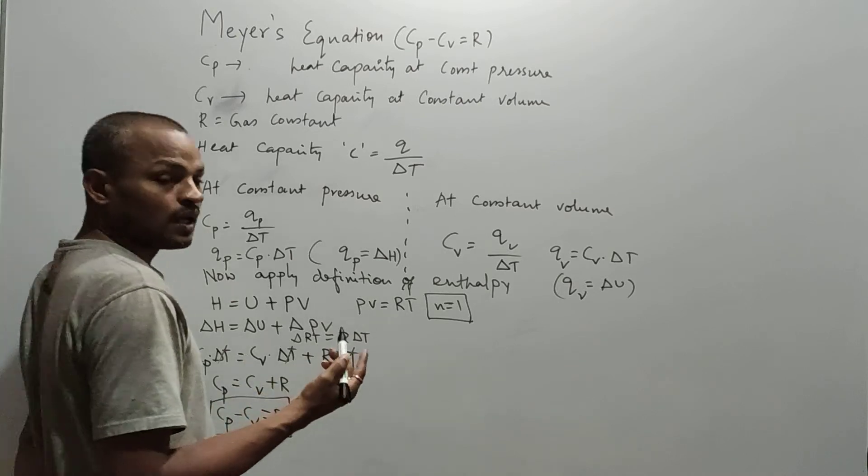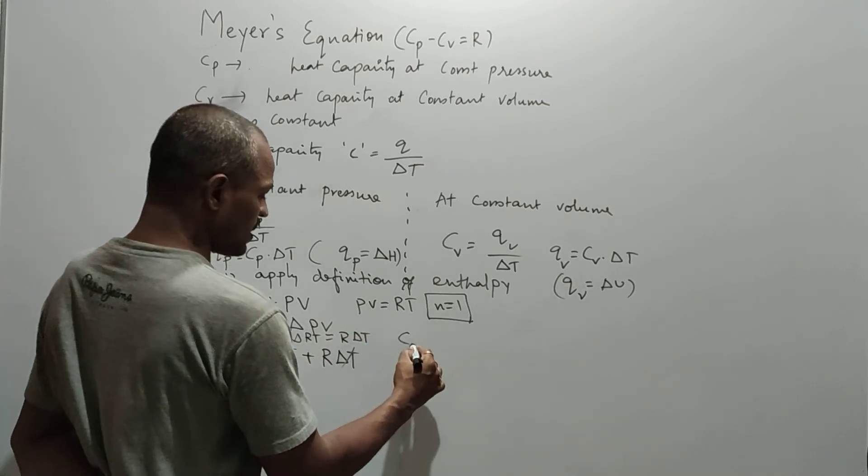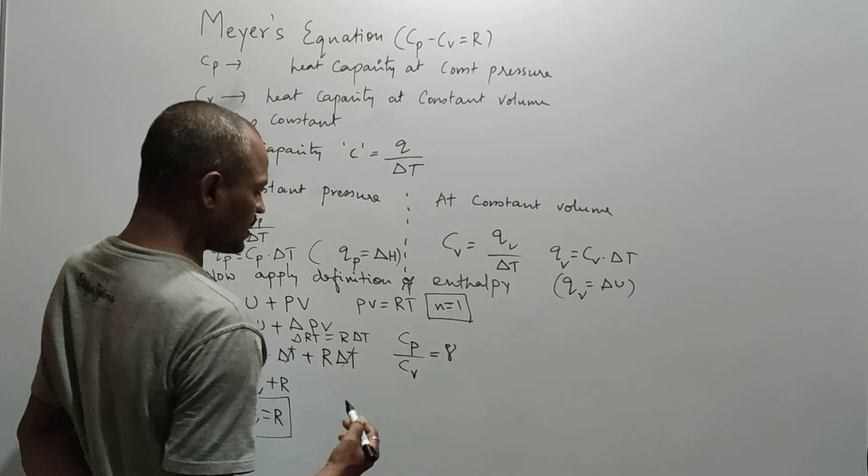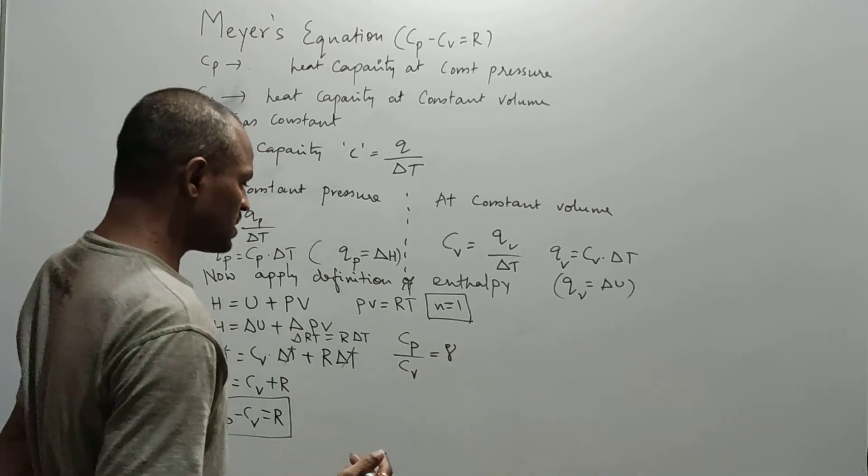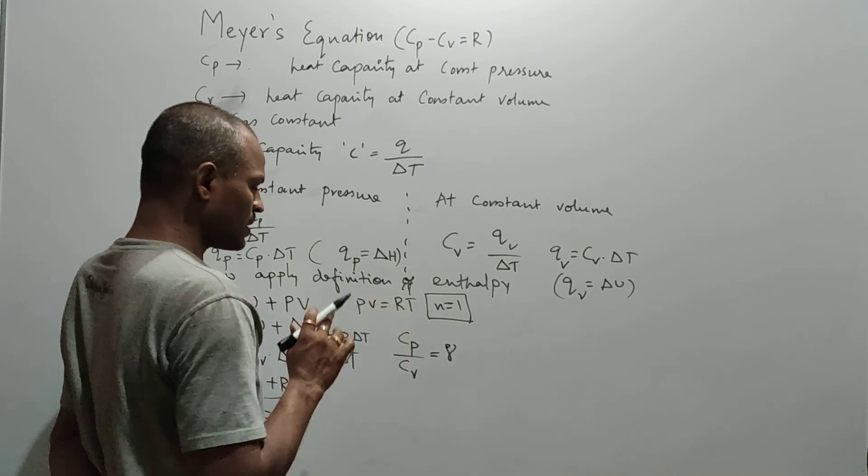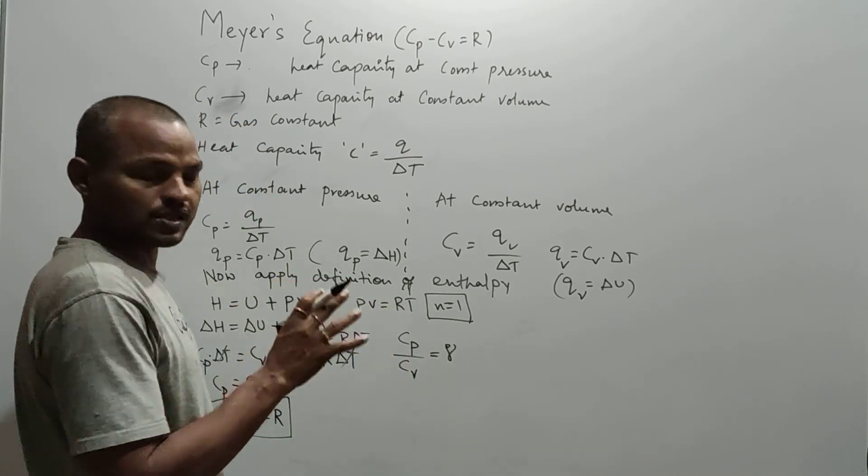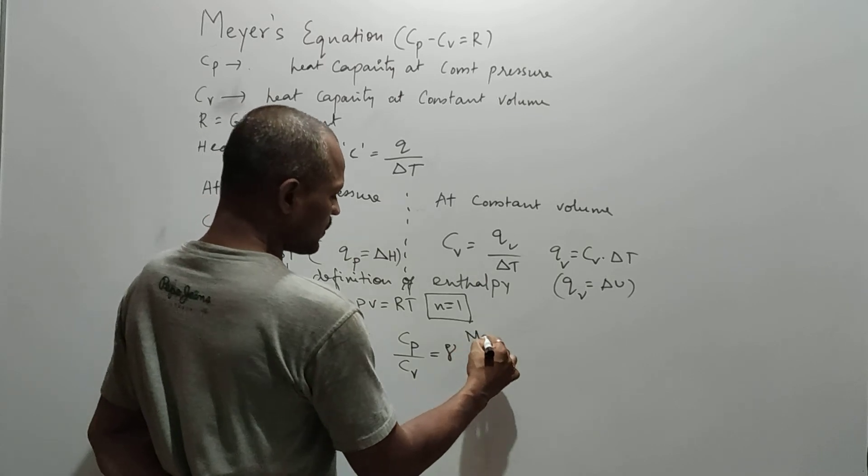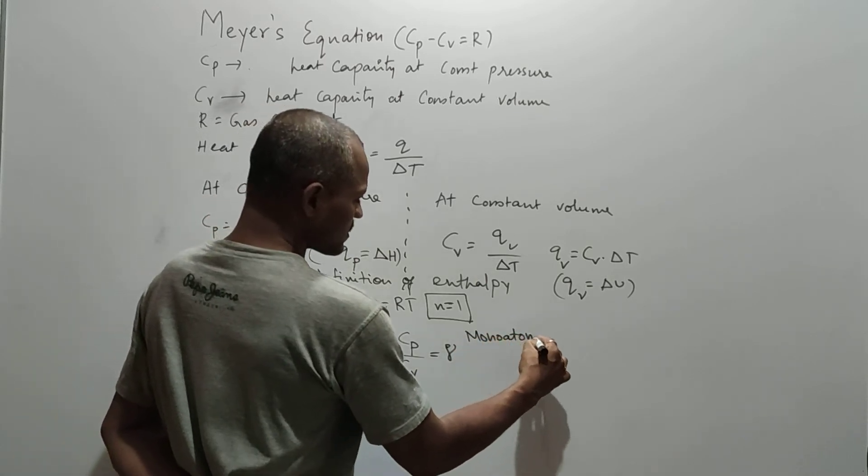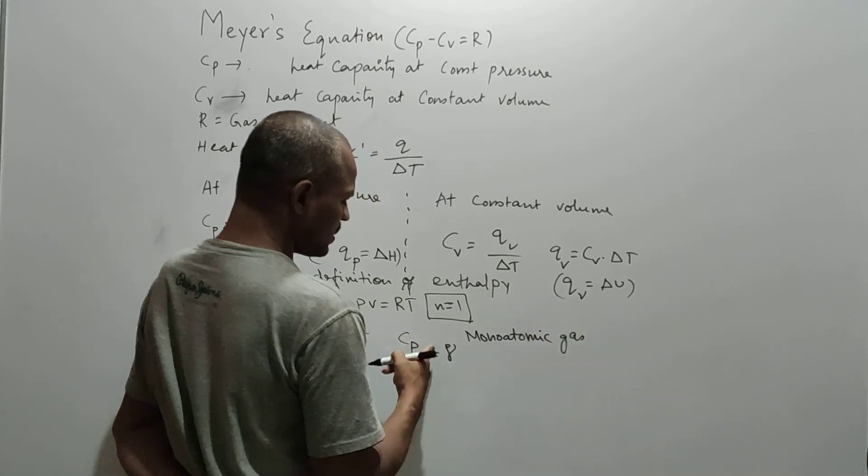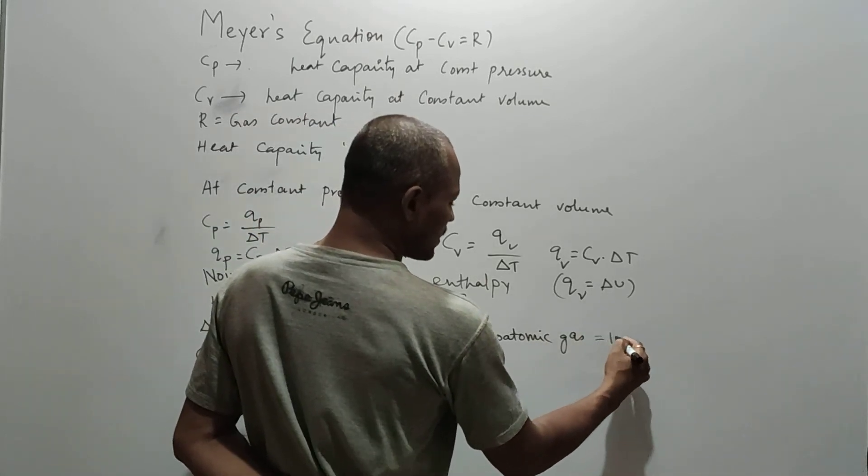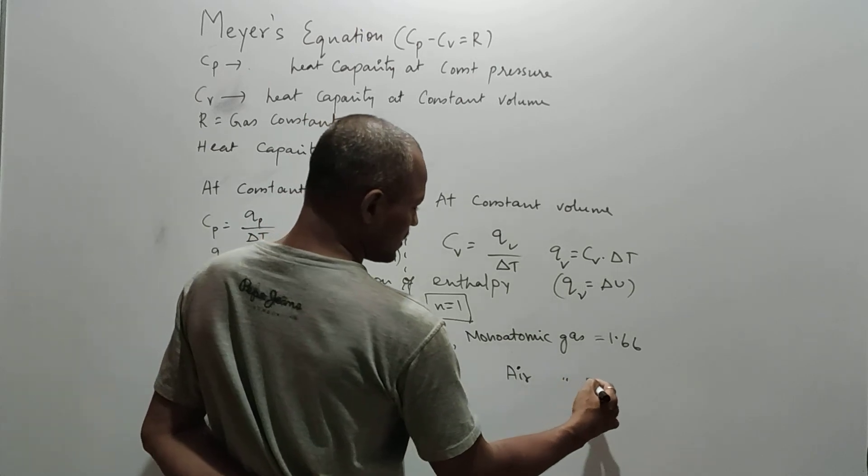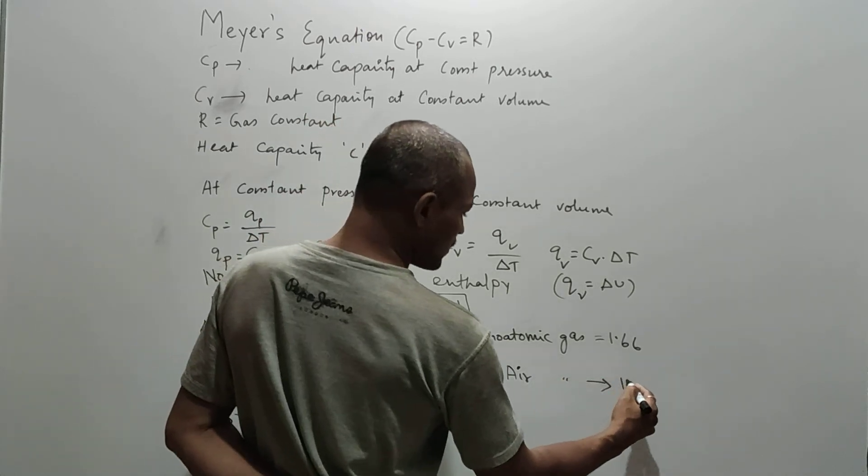Now the ratio of the Cp by Cv, we call this as gamma. So where it indicates the speed of sound. Now for any gaseous area or volume, if the for monoatomic gas, the gamma value is calculated as 1.66, and for the diatomic, its value is 1.4.